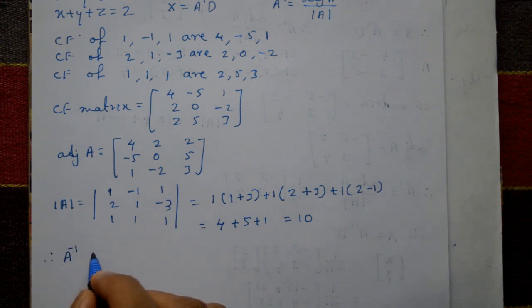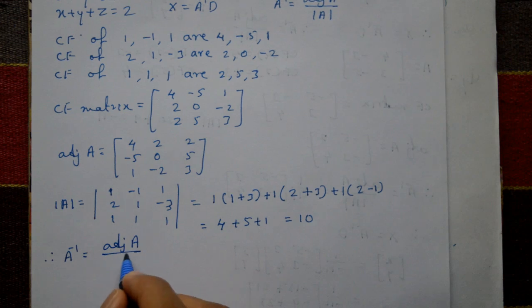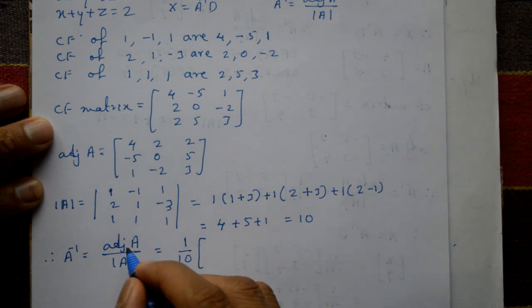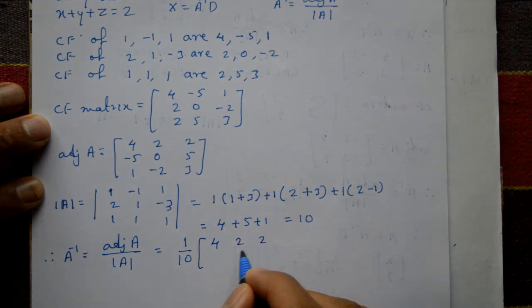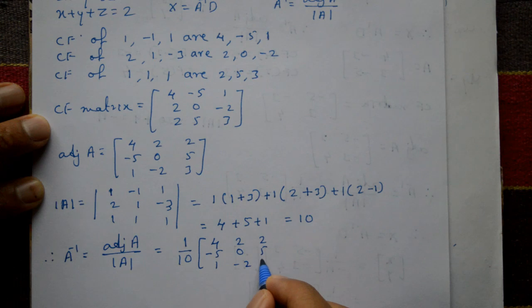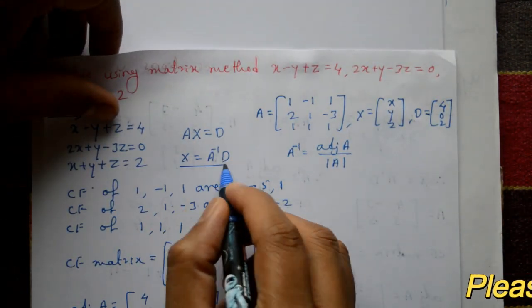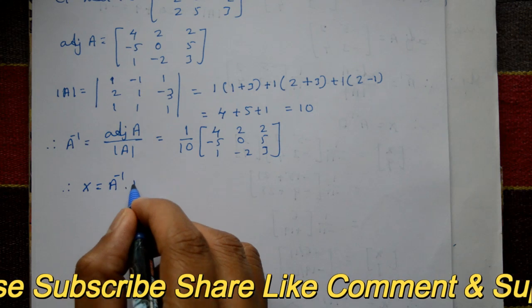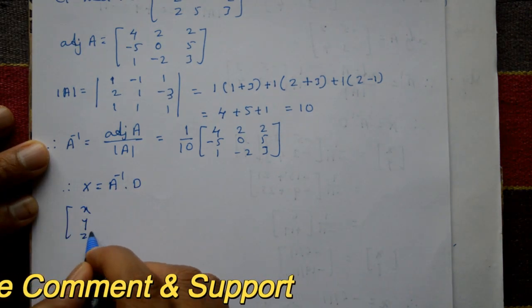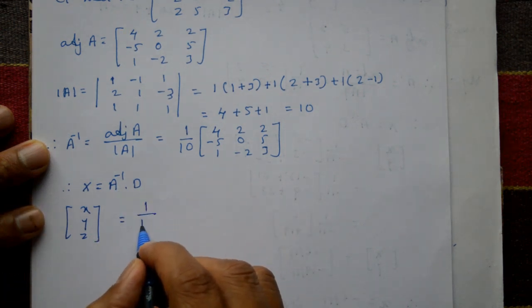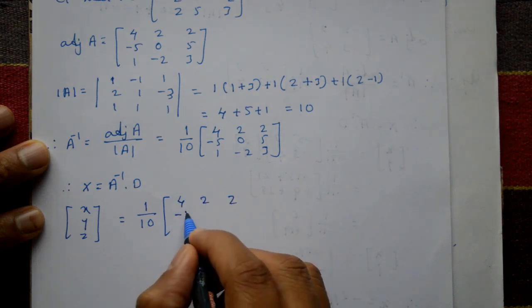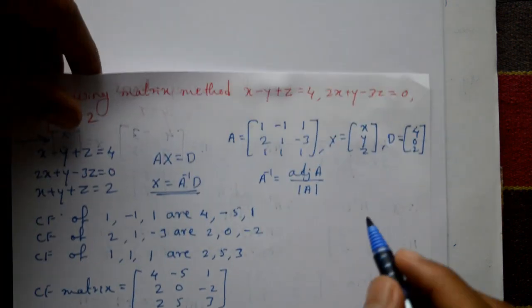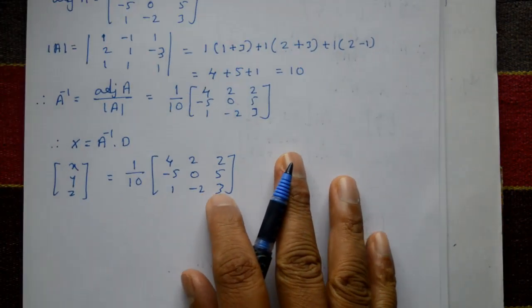Therefore, the inverse of A equals (1/10) times the adjoint of A, which is (1/10) times the matrix [4, 2, 2; -5, 0, 5; 1, -2, 3]. This is the inverse of A. Next, x equals A inverse times D, so the column matrix [x, y, z] equals (1/10) times [4, 2, 2; -5, 0, 5; 1, -2, 3] times the column matrix D = [4, 0, 2].